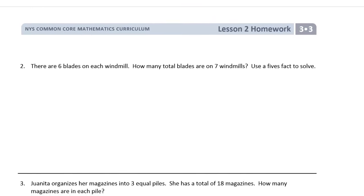Now we have a word problem. There are 6 blades on each windmill. How many total blades are on 7 windmills? Use a 5s fact to solve. How do you do that? Well, you've got to draw a picture first, right? I mean, because it's RDW. For every word problem. Every time. Every day. So, we've read it. We're going to draw a picture. So, each windmill has 6 blades. So, let's draw. We could draw 7 windmills with 6 blades. We could actually do that.